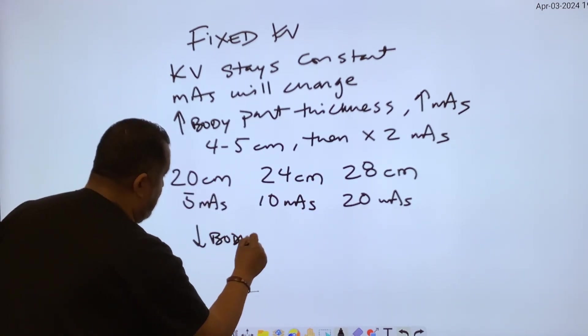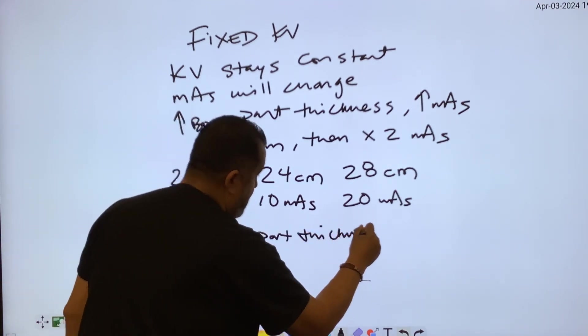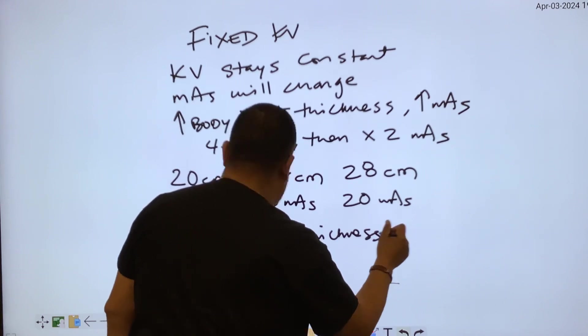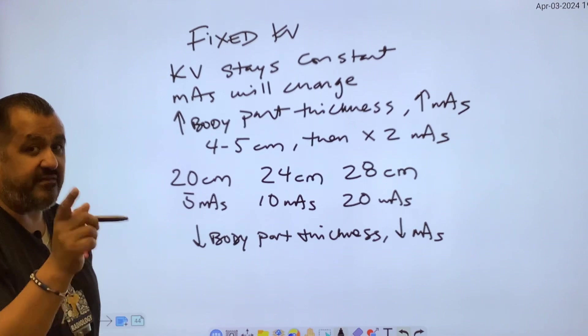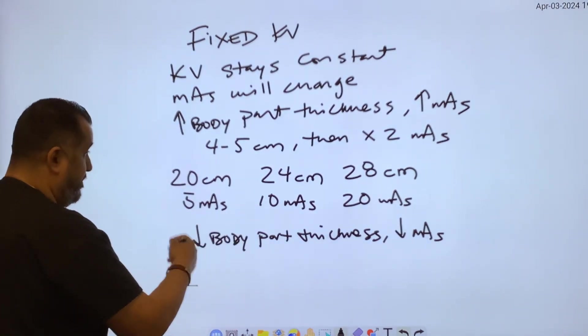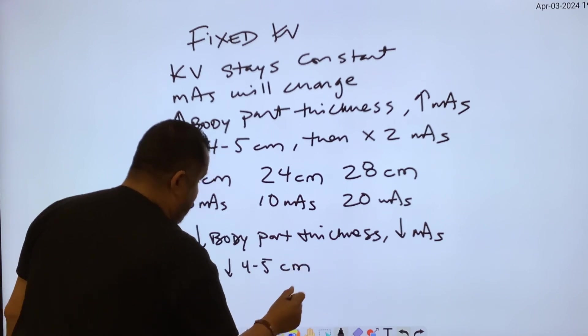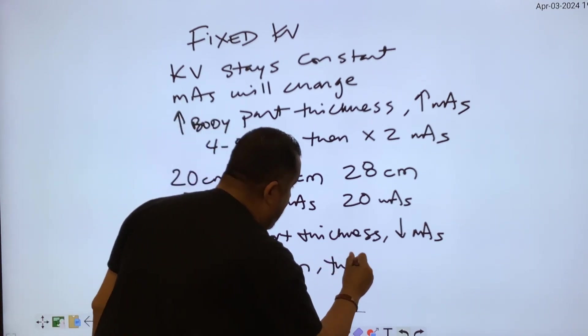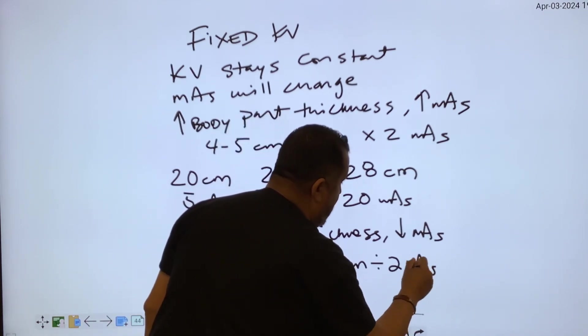If the body part thickness is decreasing, then so does your mAs. Again, the KV is staying the same - it's staying fixed. So if you go down for every four to five centimeters, then you're going to have to half your mAs. You're going to divide by two.